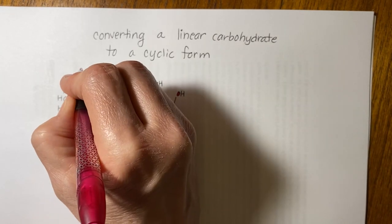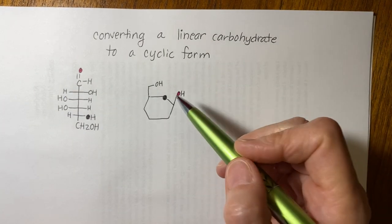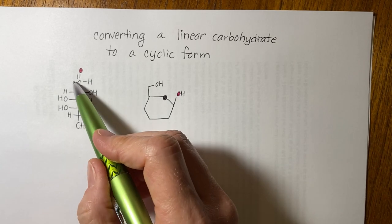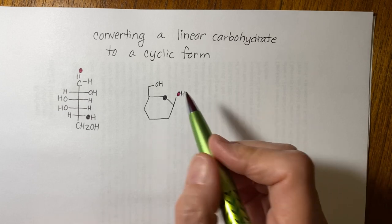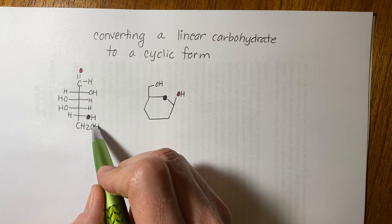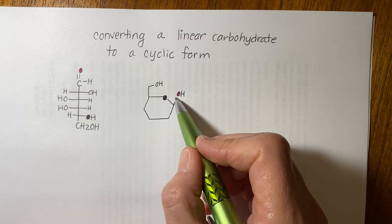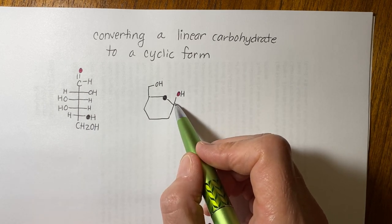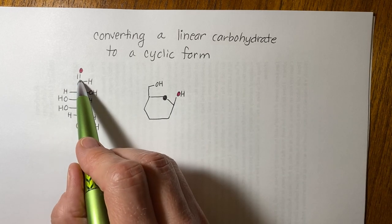The first hydroxyl goes on that oxygen. It can either point up or down because this is a planar carbonyl, so you don't really have a choice on this position. Because it's a D sugar with six carbons you do have a choice on this one, but it doesn't really matter where you put it because originally it was a carbonyl oxygen.